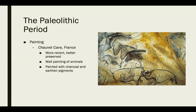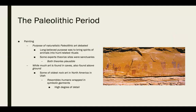These are photographs from the cave itself — thousands of years old and perfectly preserved. The purpose of naturalistic Paleolithic art is debated. It's long been believed that the purpose was to bring spirits of animals into hunt-related rituals — if they were going on a big hunt, they would depict animals in their artwork to summon them or bring luck. Some experts theorize these sites were more so sanctuaries, but both theories are plausible. While much art is found in caves, some is also found above ground — like this rock art found in the Utah desert, which resembles humans wrapped in symbolic garments with a really high degree of detail.